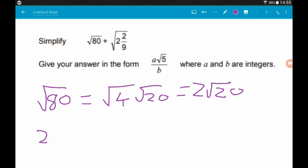Now, 2 root 20 can be written as 2 root 4 root 5. So, this is saying 2 times the square root of 4 times the square root 5. Again, root 4 is 2. So, this is 2 times 2 root 5 which gives us 4 root 5.